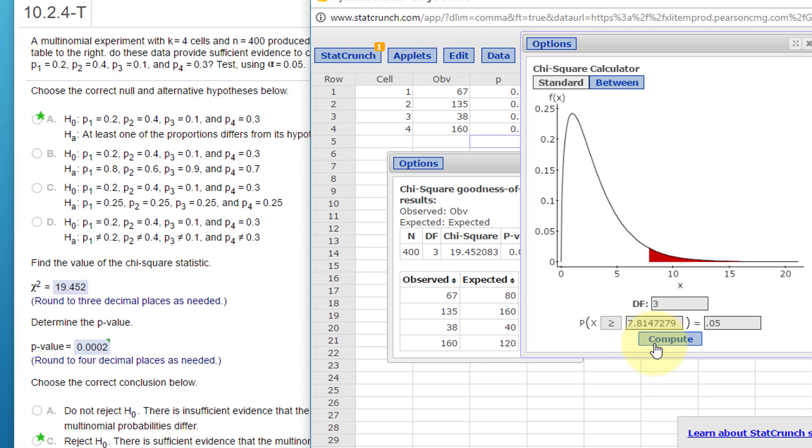So my critical value of chi-square is 7.8. My test statistic is 19, so it's way out here and that's the reason that the p-value is so low, because we're way out there. So again that means we reject the null.